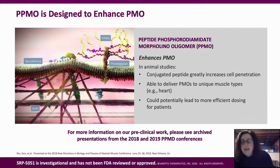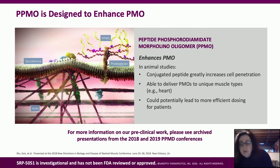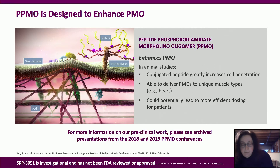PPMO is our next generation exon skipping technology designed to enhance the PMO. The 'P' in PPMO stands for peptide, and in animal studies the conjugated peptide greatly increases cell penetration and is able to deliver PMOs to unique muscle cell types such as the heart. This enhanced penetration could potentially lead to more efficient dosing for patients — for example, in our PPMO program we dose every month, not every week. Our specific product SRP-5051 was granted fast track designation by the FDA last week.